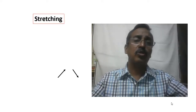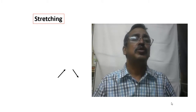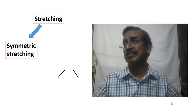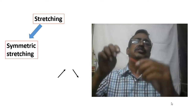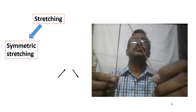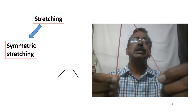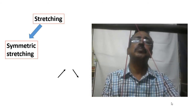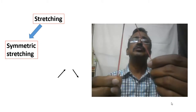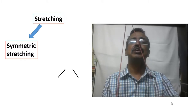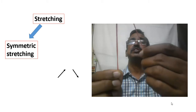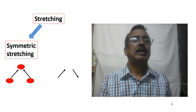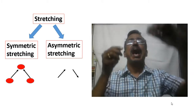During stretching, the bond length changes and there are two types. The first is symmetric stretching. For a V-shaped molecule having two bonds, during symmetric stretching both bonds stretch simultaneously — the length of both bonds increases simultaneously, and the length of both bonds decreases simultaneously. This is called symmetric stretching.